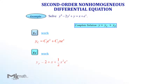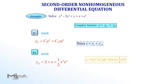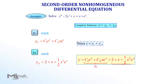Now that we have verified the particular solution, let's write the complete solution. Putting the two solutions together, the complete solution is Y equals C₁·e^x plus C₂·x·e^x plus (2 plus x plus one-half x squared)·e^x.